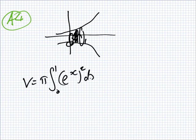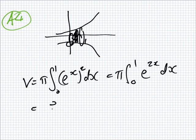So, the formula for volume is pi integral from 0 to 1, e to the x squared, that's pi 0 to 1, e to the 2x.